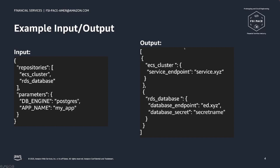The output, which is defined in these templates, can give any number of information back to Backstage, and Backstage can then determine what is given to the end user. In this example, we have a service endpoint for the cluster, the database endpoint, and perhaps a secret — for example, a username and password leveraged by the application developer in their main application.